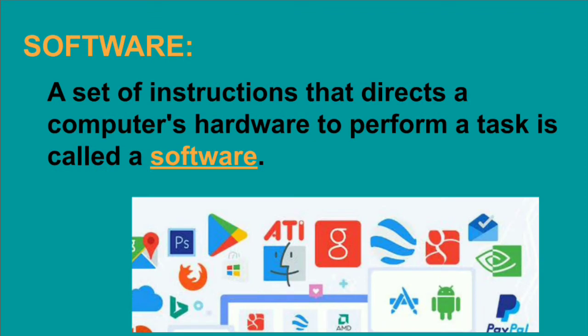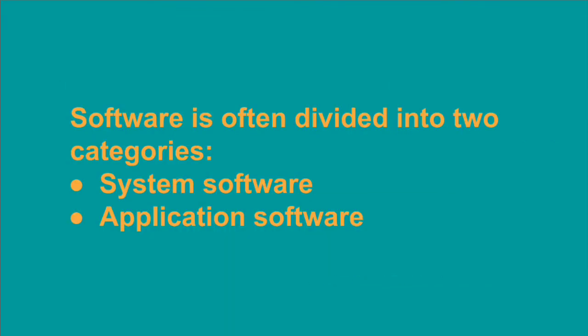A set of instructions that directs a computer's hardware to perform a task is called software. We give instructions to the computer in order to perform a task and direct its hardware. For example, if we need to take a printout, we give instructions to the printer through the software. So software is a set of instructions — it is a program.